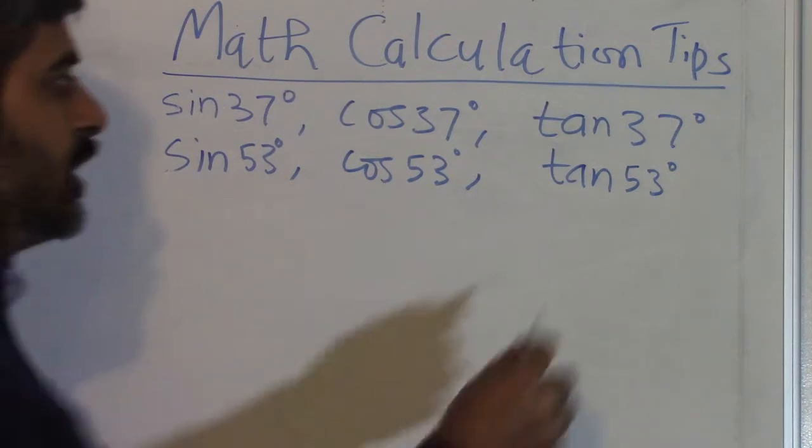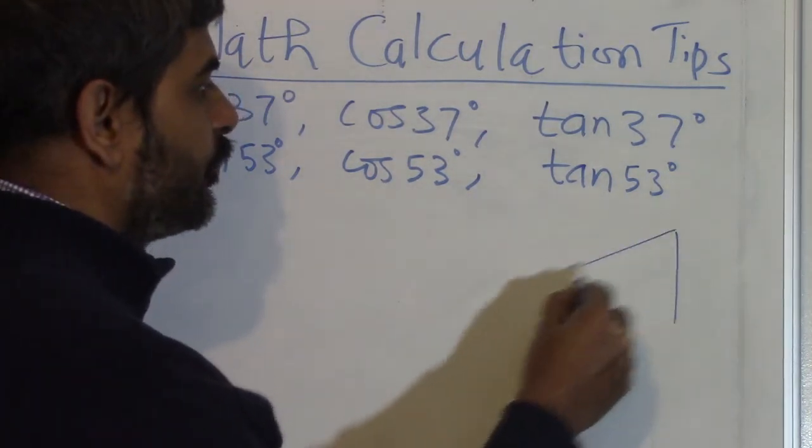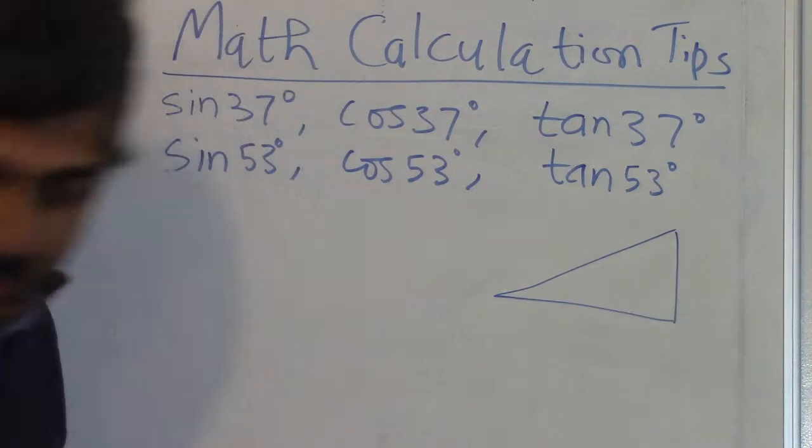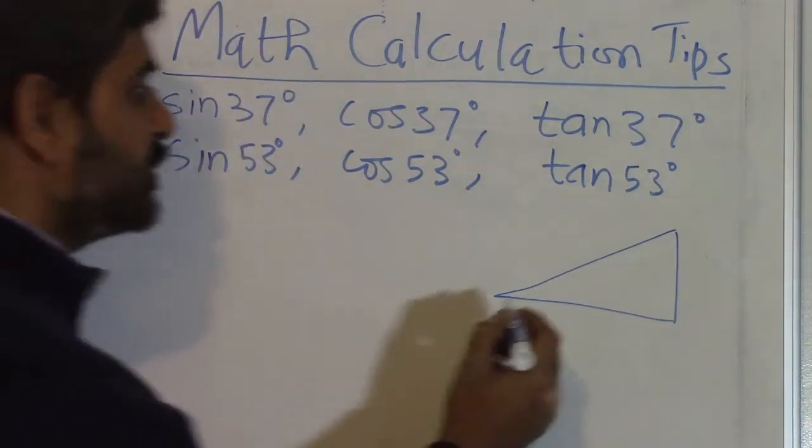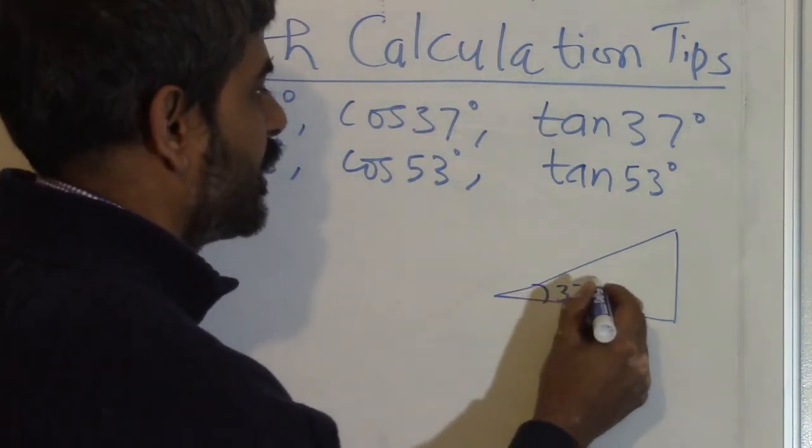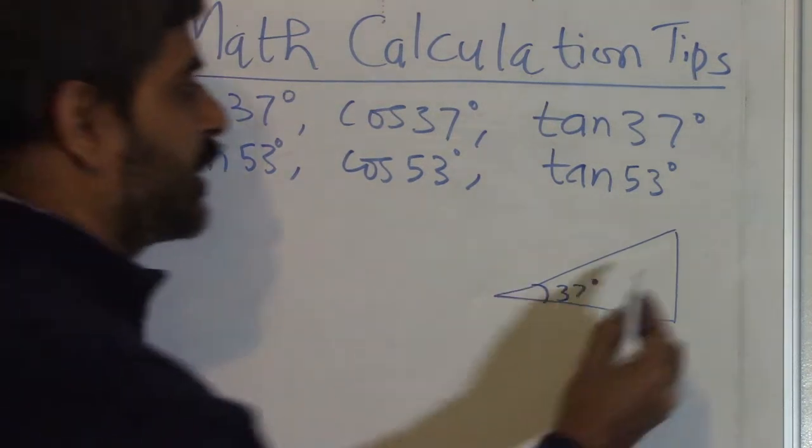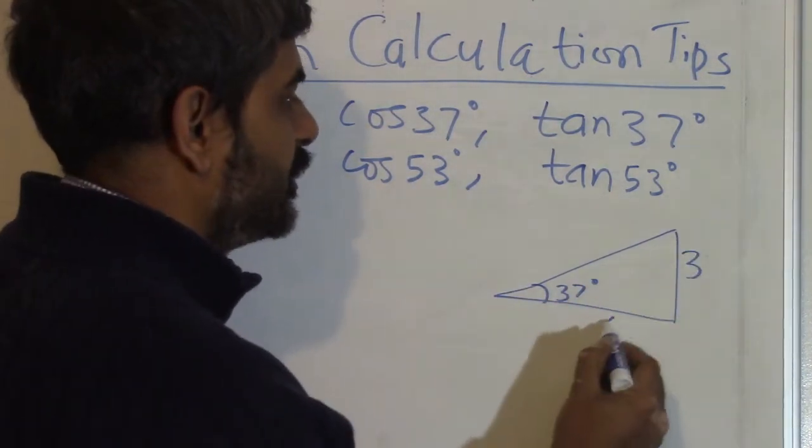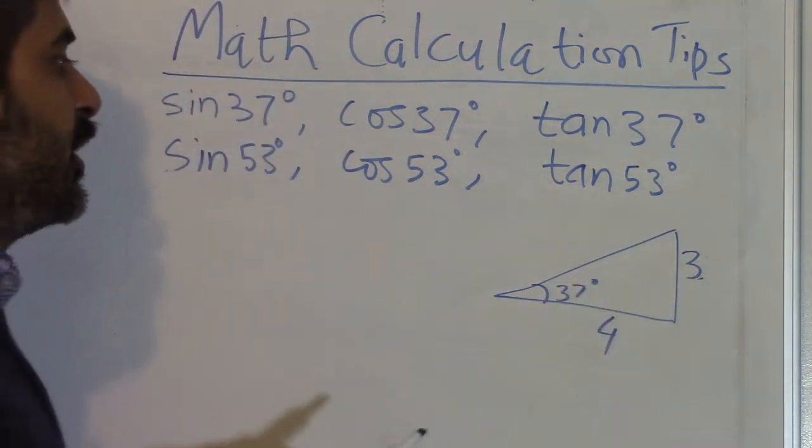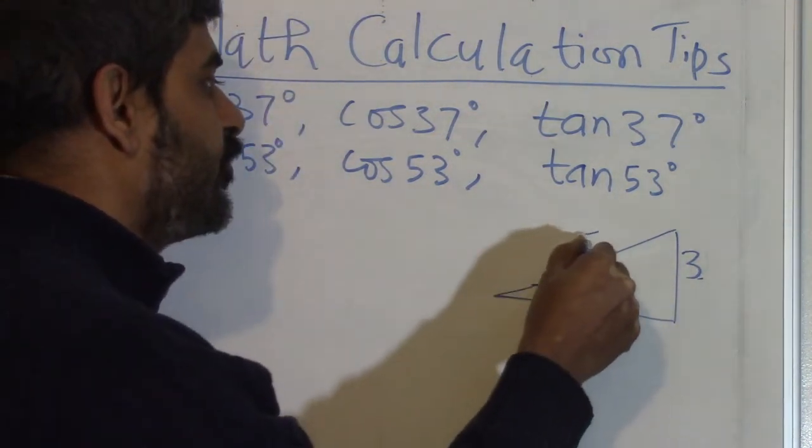So what you need to do is draw a triangle like this and make this angle 37 degrees. Then make this triangle a golden triangle, which means this side is 3, this side is 4. When these two sides are 3 and 4, this side automatically becomes 5.